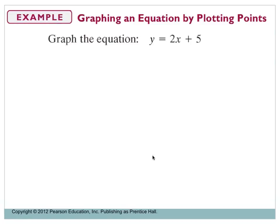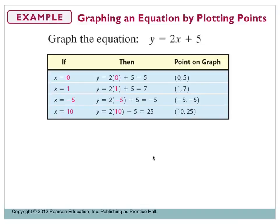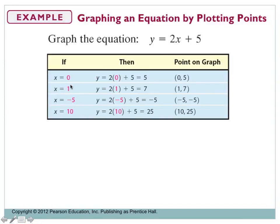To graph an equation by plotting points, take y = 2x + 5 and pick values for x. The example uses x = 0, 1, -5, and 10. These could be anything — you can also pick x from -2 to 2, which gives you enough points for a graph. If your equation has a fraction, pick x values that make the fraction cancel so you end up with nice points.